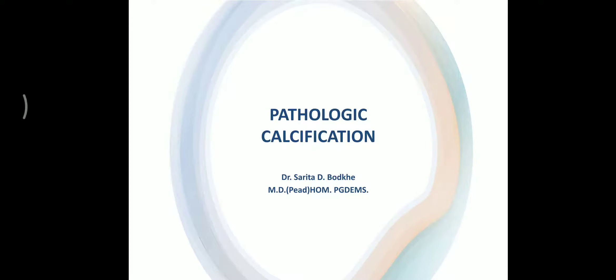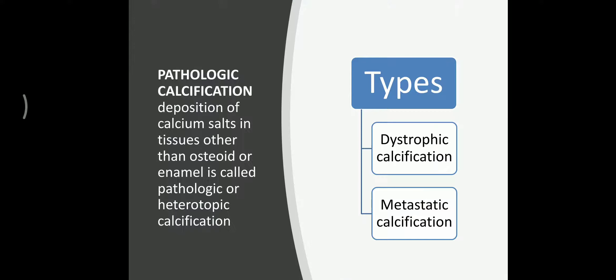Hello friends, today's topic is pathological calcification. Calcification normally occurs in bone and enamel of teeth. Pathological calcification is the deposition of calcium salts in tissues other than bone and enamel. It is also called heterotopic calcification.